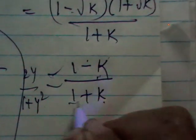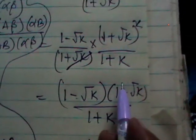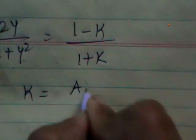So you got 2y by 1 plus y square as 1 minus k by 1 plus k square. Try to re-substitute the expression for k. What is k? a beta alpha b by a b alpha b. So let us substitute that. So you got 2y by 1 plus y square is equal to 1 minus k by 1 plus k. k is nothing but here a beta.